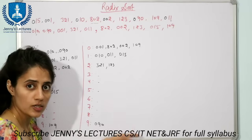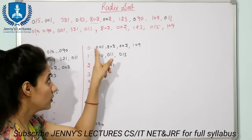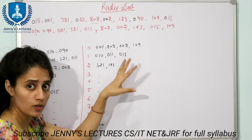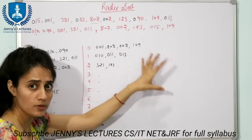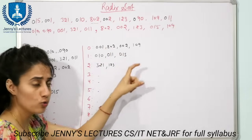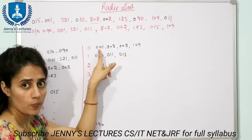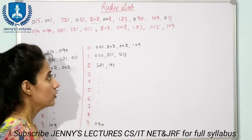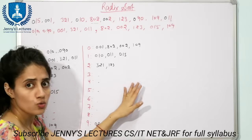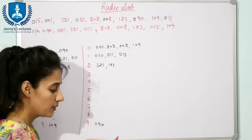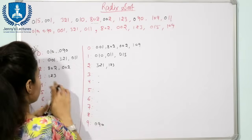Next step is to remove the data from these buckets, starting from bucket 0, removing the first-added number first. After Pass 2, the data is rearranged in a new order.